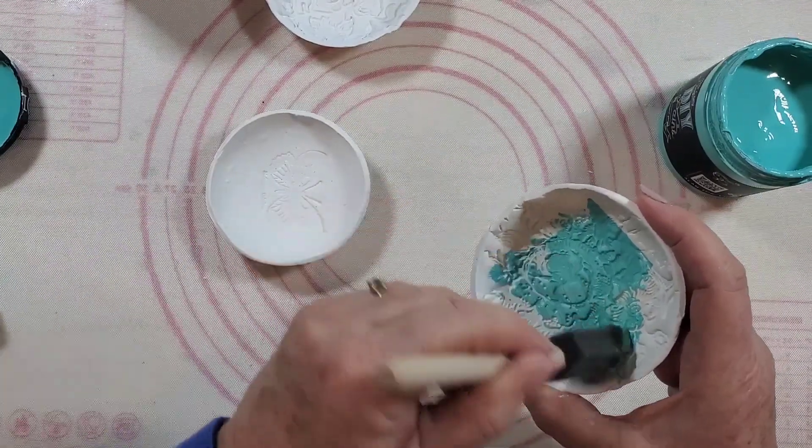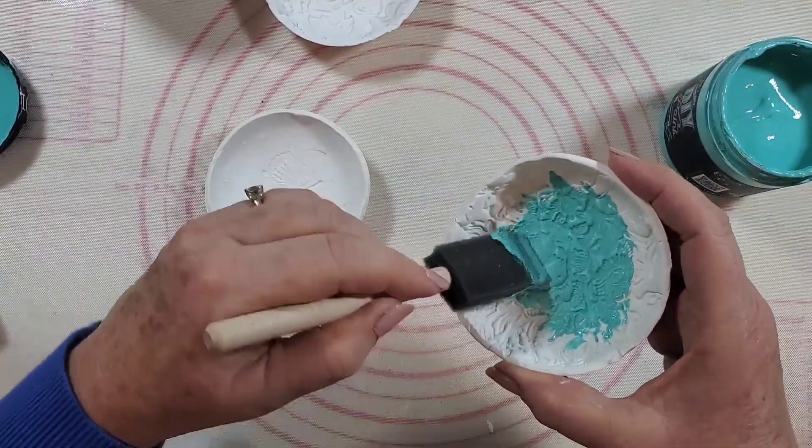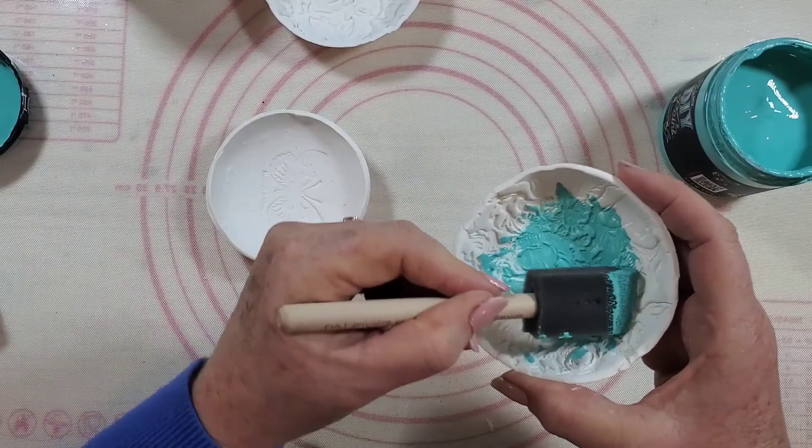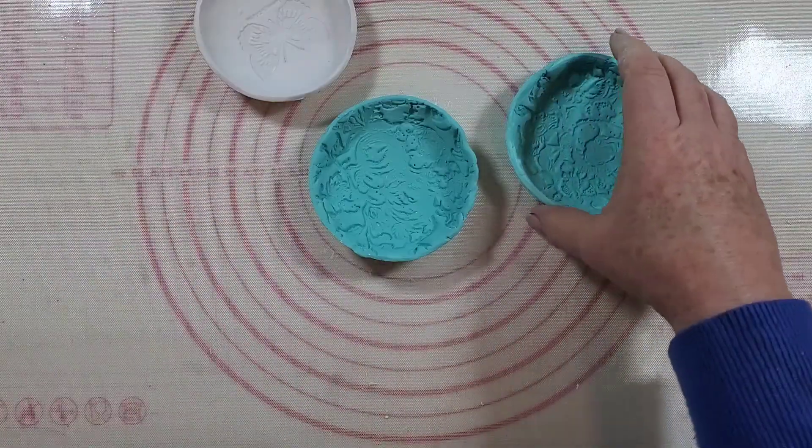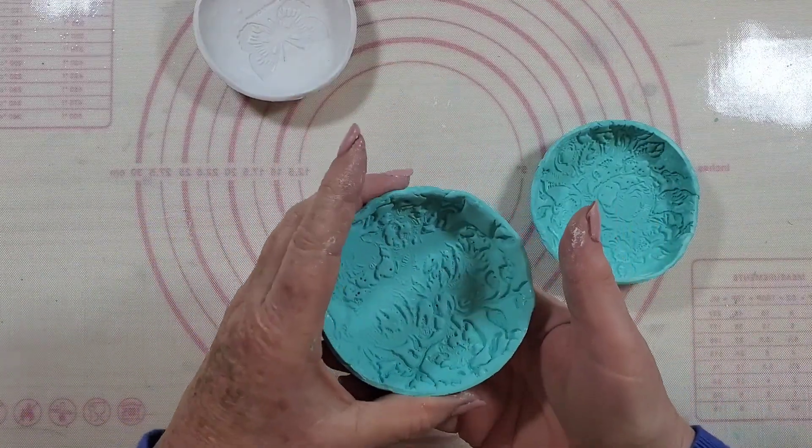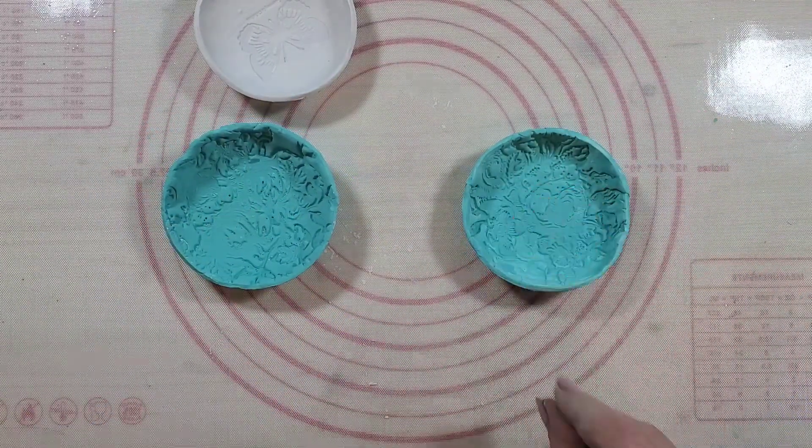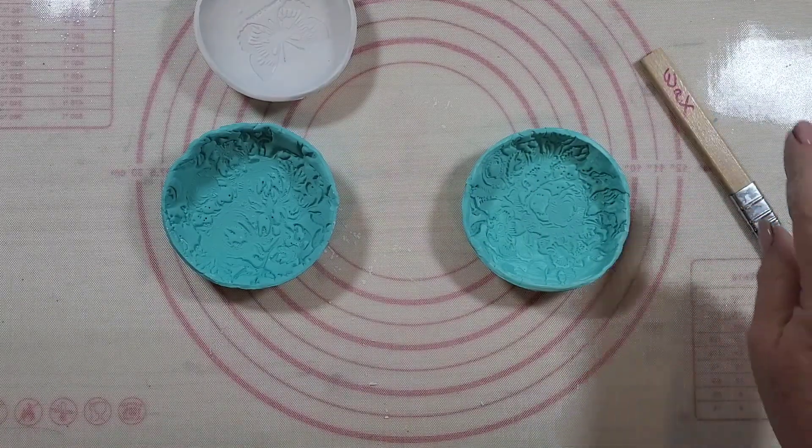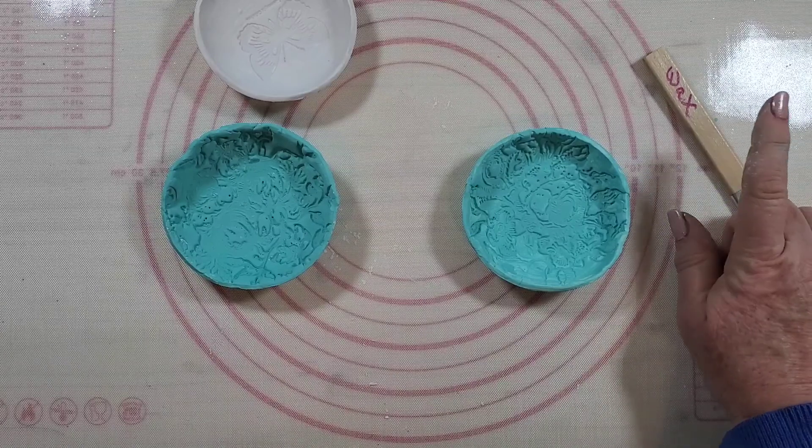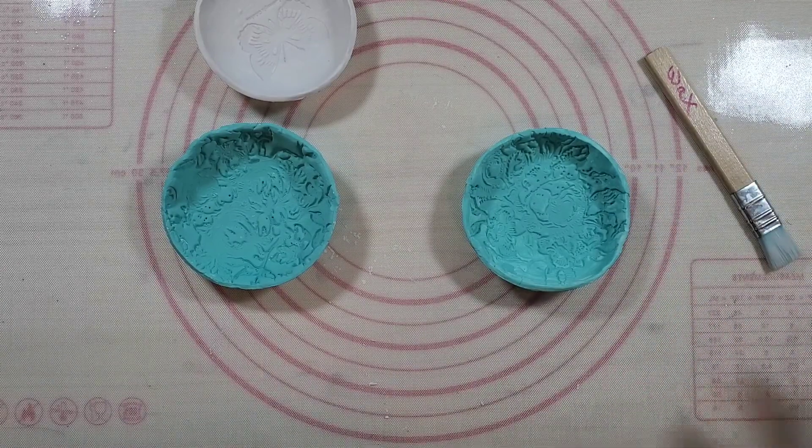I'm using a foam brush but you could use any sort of brush. Just kind of work it into the crevices of where you did your stamping. So this one is the air dry clay, this one is the Sculpty that I had done before. I'm going to get out my wax brushes. I always write on my brushes 'wax' because you go to use them for paint and then they don't want to stick, so this way you keep them separate.